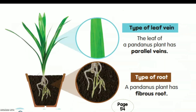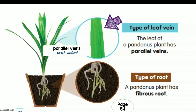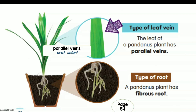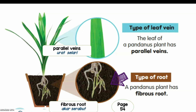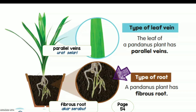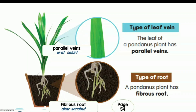The leaf of a pandanus plant has parallel veins — pokok pandan mempunyai daun jenis urat selari. A pandanus plant has fibrous roots — jenis akar serabut. The root system is made up of numerous branching roots — akar-akarnya tumbuh berserabut.